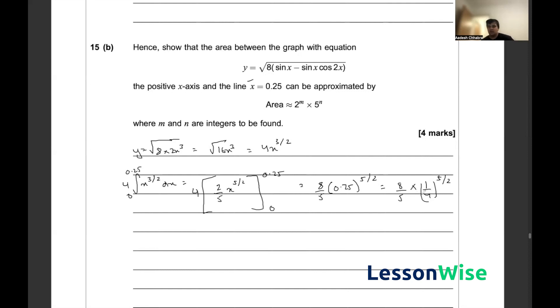The square of 1 quarter is just 1 half, so I can further simplify this into 8 by 5 times a half to the power of 5.